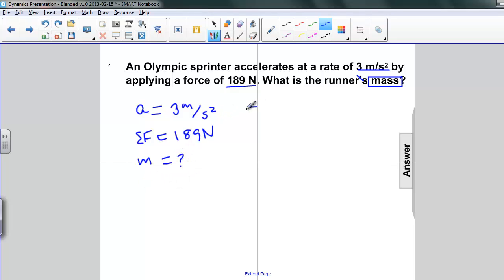So again, Newton's second law: net force is equal to mass times acceleration. And just as last time, we need to get the mass by itself, so we're dividing by A, and we get mass equals net force divided by acceleration.